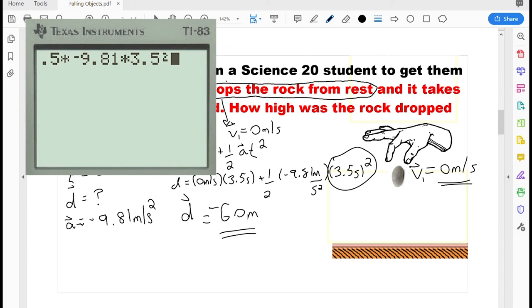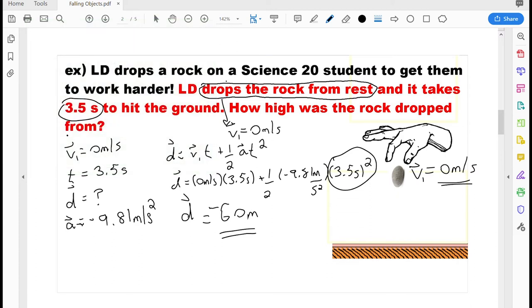So when I type that through my calculator, I end up getting negative 60 meters. You might be wondering, why do you get a negative number in there? That seems kind of weird.